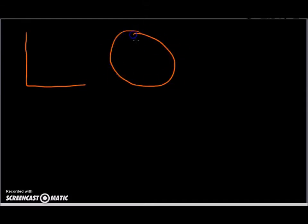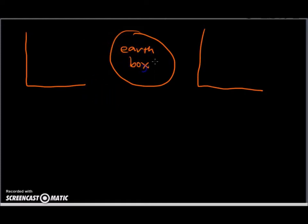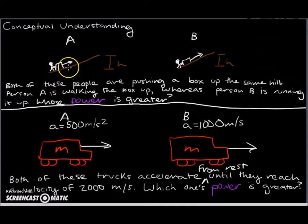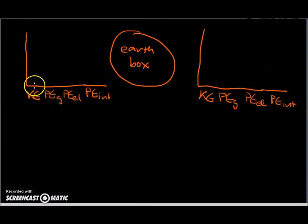We're going to define the system as the earth-box system. We need to label our axes: kinetic energy, potential energy of gravity, potential energy elastic, and potential energy internal. In the beginning, regardless of whether it's situation A or B, we have no kinetic energy and no potential energy because the box is at the bottom of the hill, not yet being pushed.